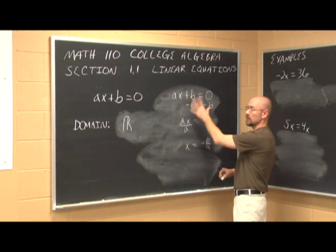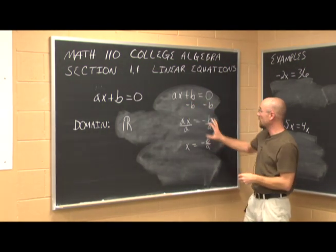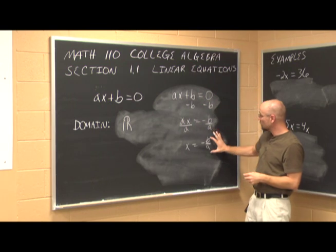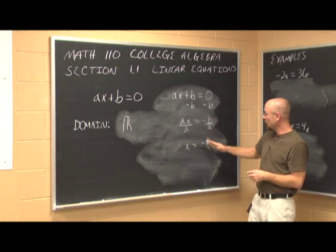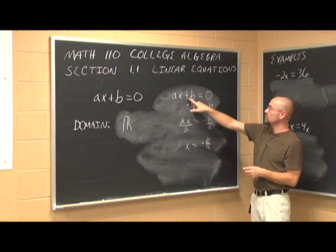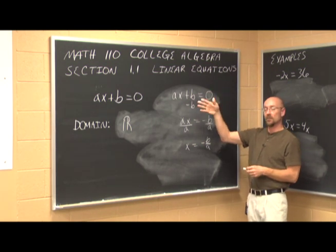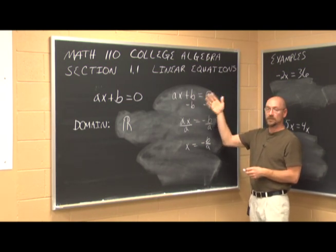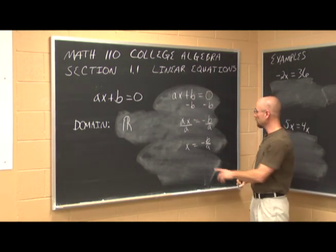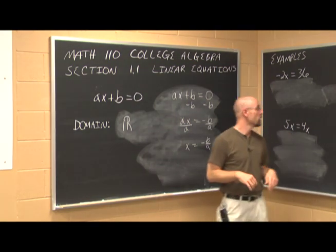I want to plug the solution back in to check it. I get a times the quantity negative b over a — the a's cancel — and I get negative b plus b equals 0. A number minus itself is 0, which is a true statement. So this is my solution, and I've checked it.